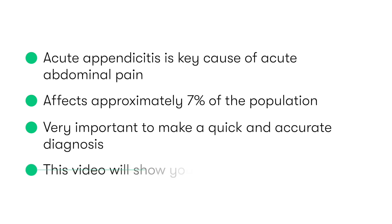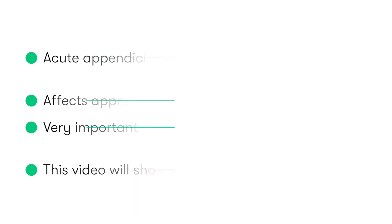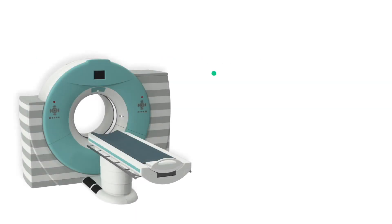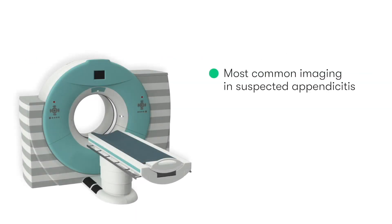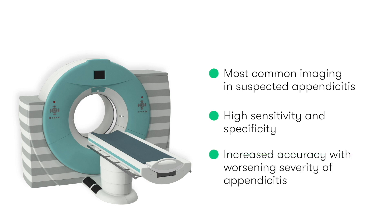In this video, we're going to focus on how we can make the diagnosis of acute appendicitis using a CT, or CAT, scan. CT is the most commonly used imaging investigation in adults with presumed appendicitis. It's highly sensitive and specific, with increasing accuracy as the severity of the appendicitis increases.